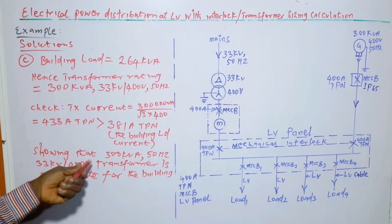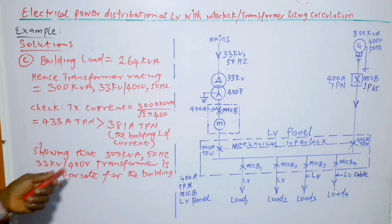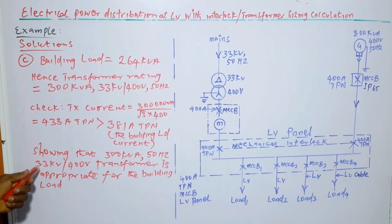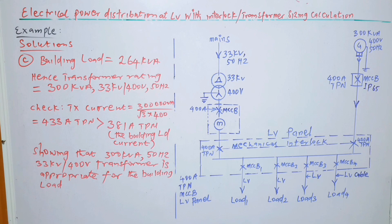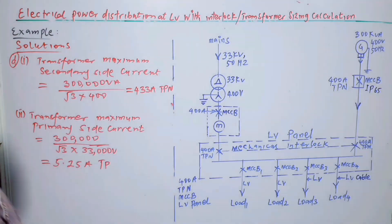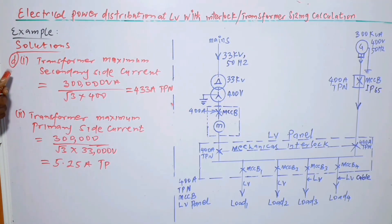So that is showing that 300 kVA at 50 hertz with 33 kV on the primary side and 400 volts on secondary side transformer is appropriate for the building load. And that is the answer to C part. One can move a step further by having the D part.